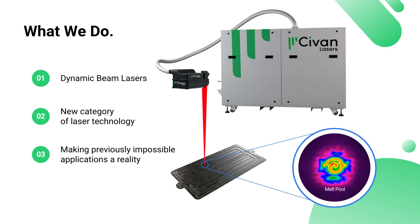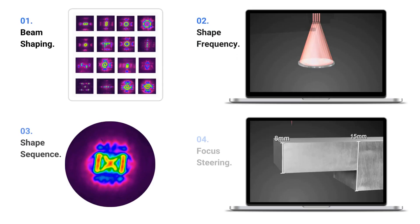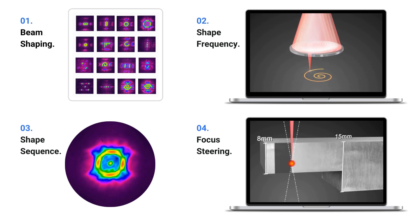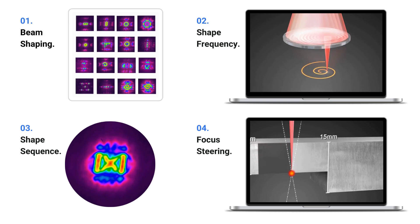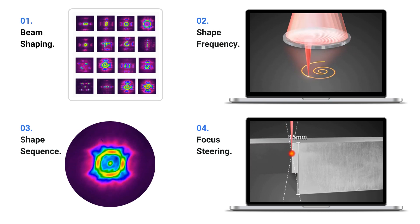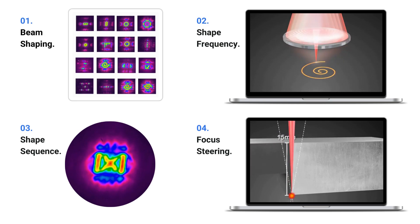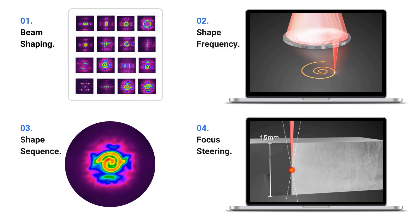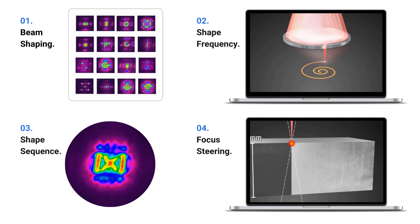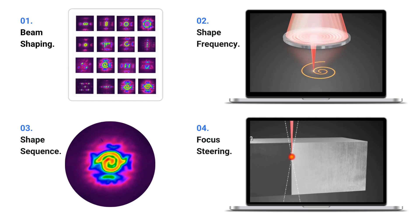Dynamic Beam Laser offers four unique features. Beam Shaping – the ability to design any arbitrary beam shape. Shake Frequency – to steer the beam from 1 Hz to 50 MHz in any arbitrary pattern.